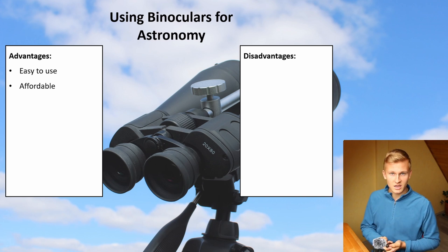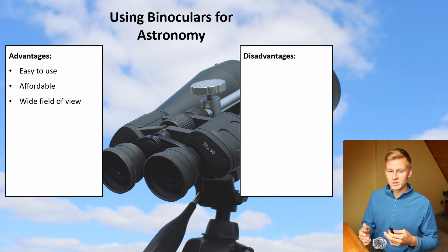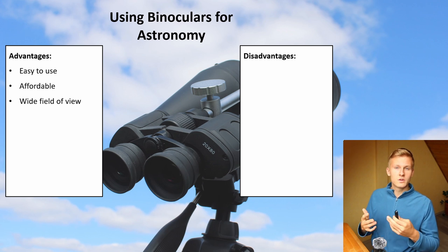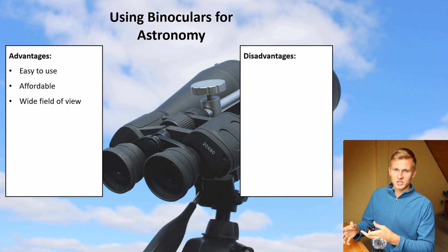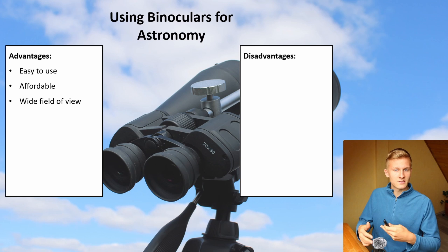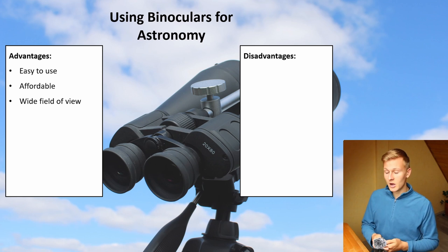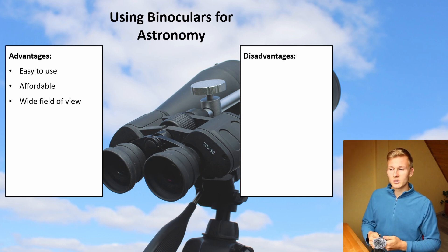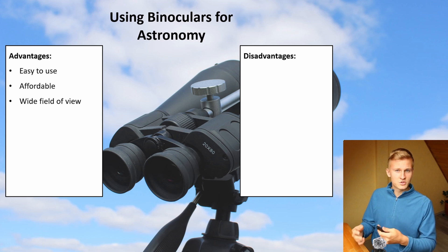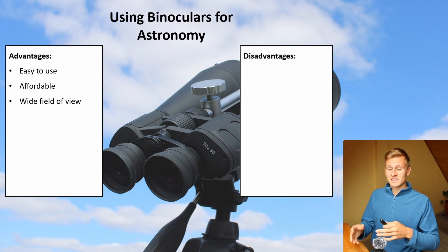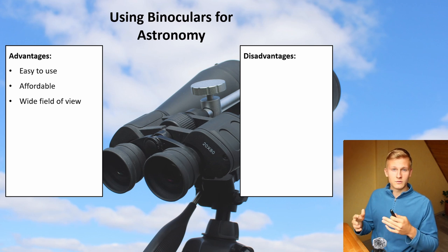The next advantage of using binoculars is that they have a wide field of view, and that specific wide field of view has two different advantages. When starting into astronomy, you usually don't know the night sky that much, which means it might be challenging to find objects — including galaxies, for example. When you have a wide field of view, it's easier to find those objects because big telescopes have more magnification and therefore a limited field of view, making it harder to find objects.